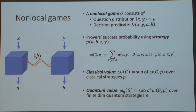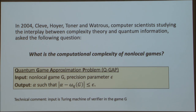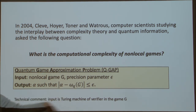Now let me turn to MIP*. In 2004, Cleve, Hoyer, Toner, and Watrous asked: what is the computational complexity of nonlocal games? They considered the problem QGAP — quantum game approximation problem — where the input is a nonlocal game G and a precision parameter epsilon, and the output should be a number alpha approximating the quantum value ω_Q of this game to within ±epsilon. The game is given as a Turing machine describing the verifier's behavior.